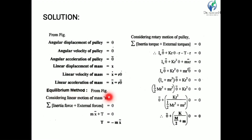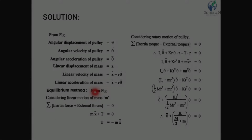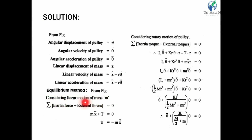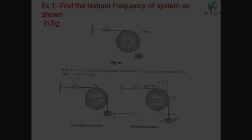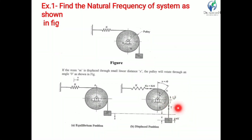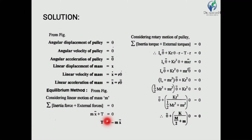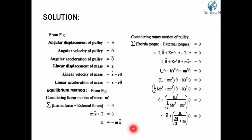We solve this problem using two methods. First is the equilibrium method. Considering linear motion of mass — according to D'Alembert's principle, the summation of inertia forces plus external forces equals zero. Inertia force always acts opposite to the direction of motion, so since mass moves downward, inertia force mx-double-dot acts upward. Thus mx-double-dot plus T equals zero, giving tension T equal to minus mx-double-dot.